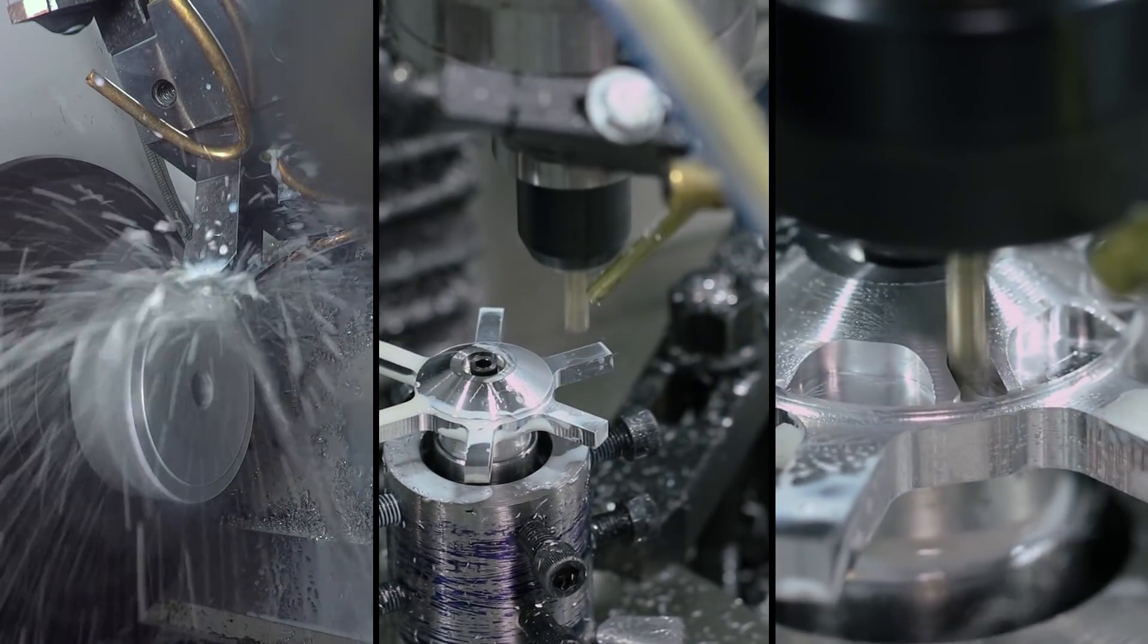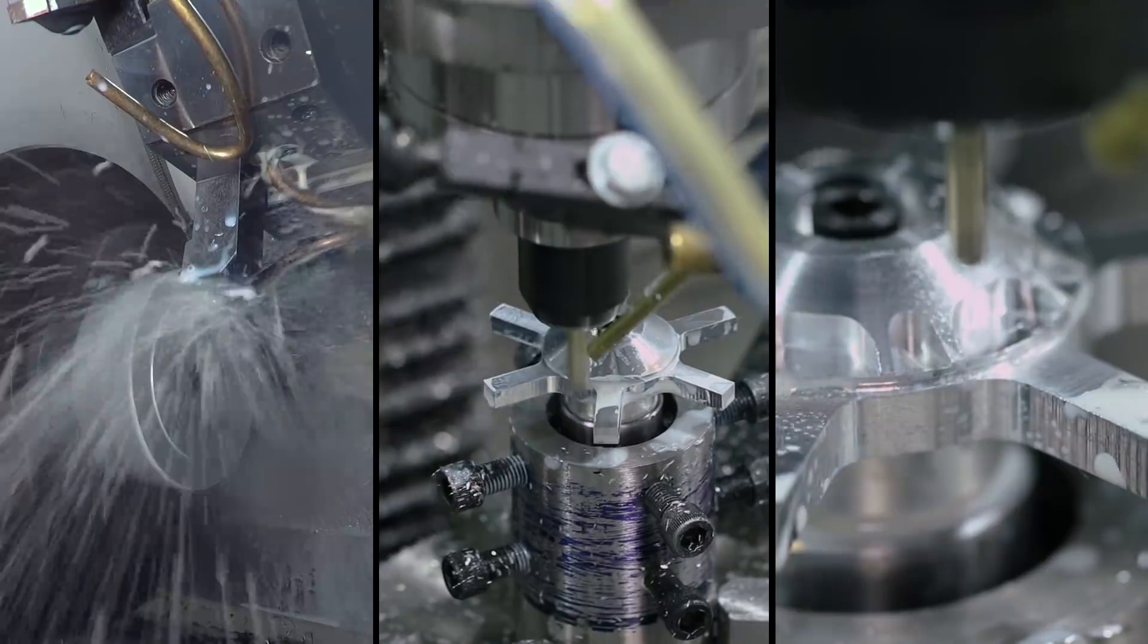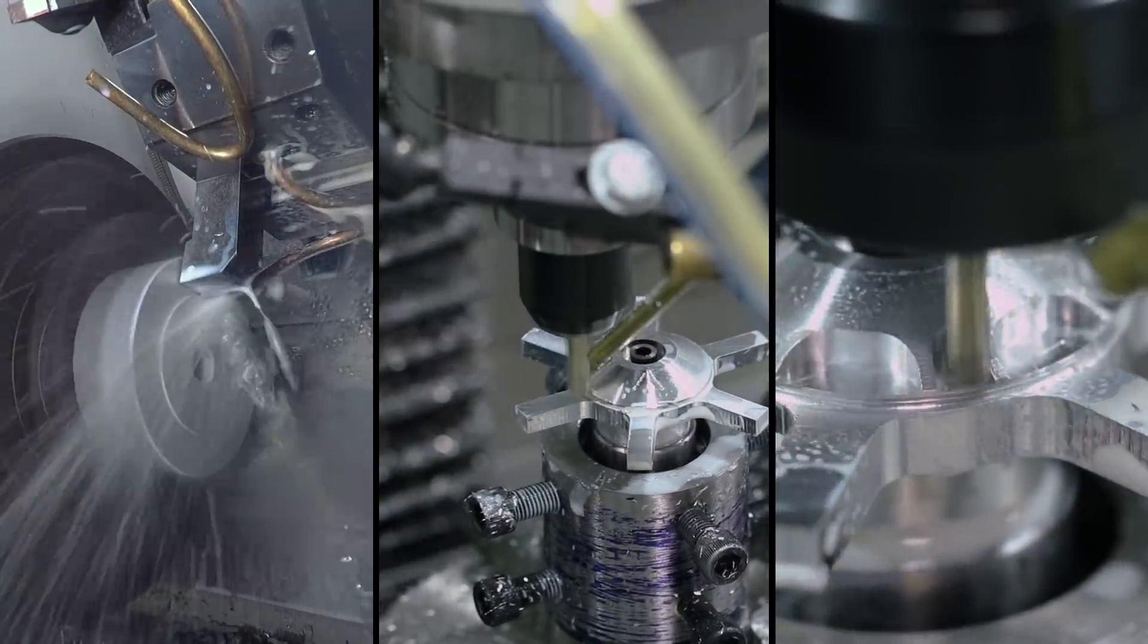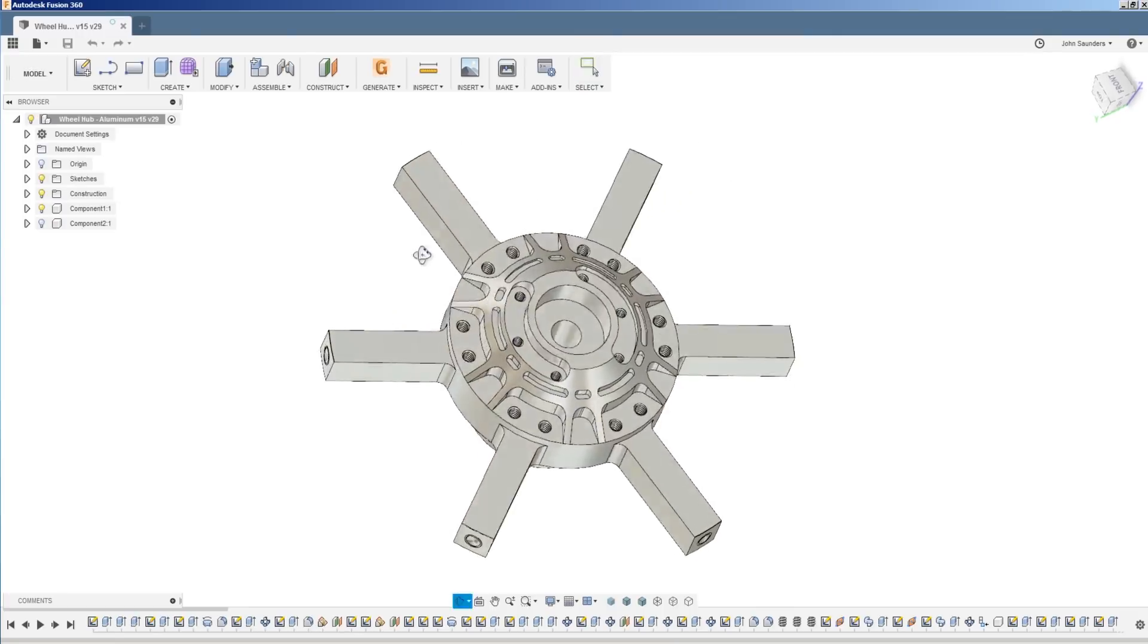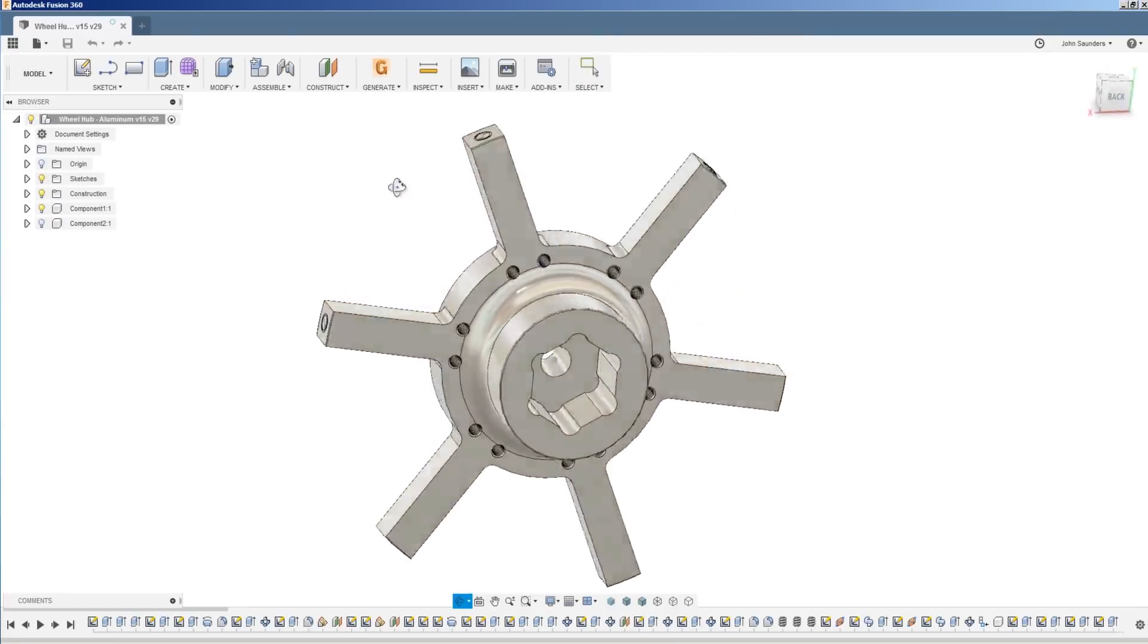And when I first saw this part to quote it, I thought, okay, it doesn't look too bad. And then I realized it's actually really pretty small, which means we've got to get some small tooling in there and get our feeds and speeds and tool run out dialed in.